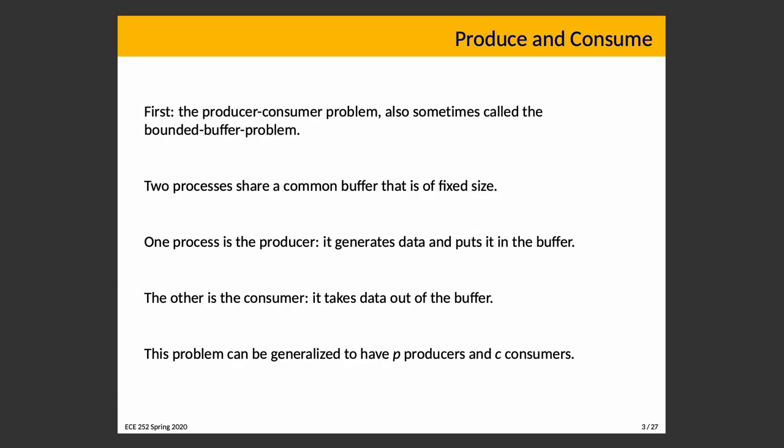We're going to start with the Producer-Consumer Problem, one of the most important ones — if for no other reason than you will probably find it in a lab exercise. This is also called the Bounded Buffer Problem in some books. The defining characteristic is that two processes share a common buffer of fixed size — it can be quite small or large, but it is fixed.